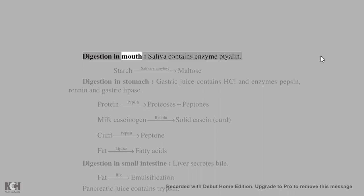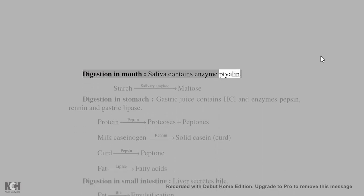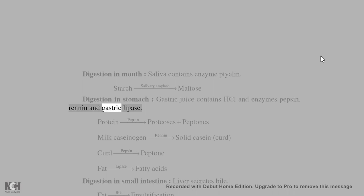Digestion in the mouth: saliva contains the enzyme ptyalin (salivary amylase), which converts starch to maltose. Digestion in the stomach: gastric juice contains HCl and enzymes — pepsin, rennin, and gastric lipase.